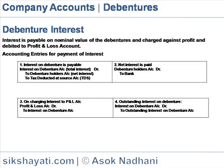Debenture Interest. A company has to pay interest on debentures at a specified rate at regular intervals, normally 6 months. Interest is payable on the nominal value of debentures and is charged against profit, debited to the profit and loss account. As per the Income Tax Act, a company is also required to deduct tax at source, or TDS — Tax Deducted at Source.